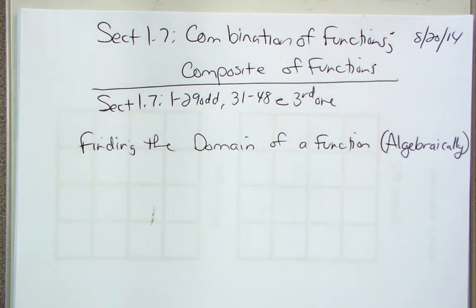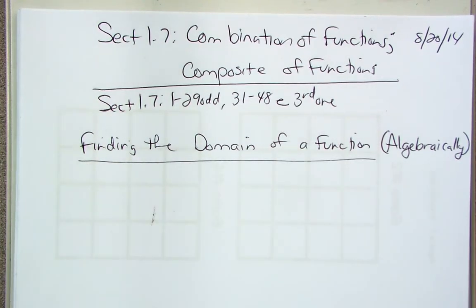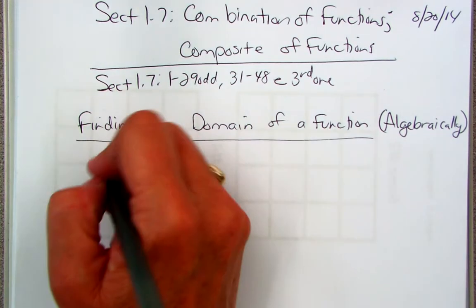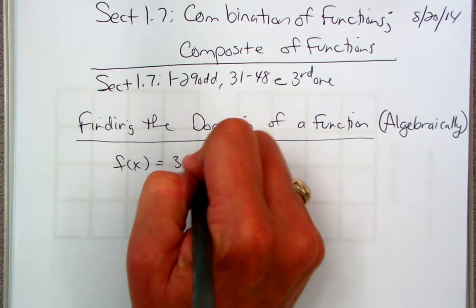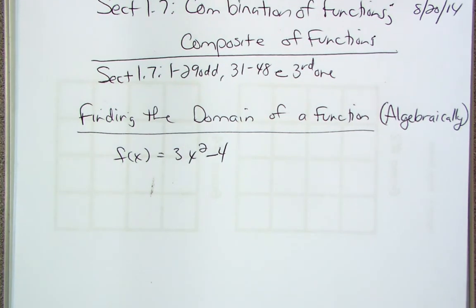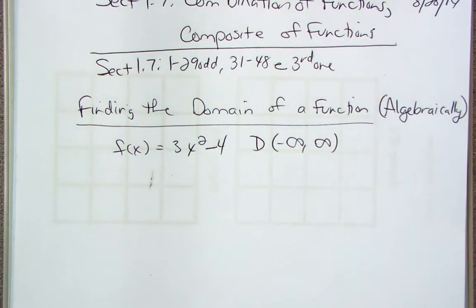Finding the domain algebraically is harder than graphically. Graphically, you can see which x-values are used. Now I have to do it algebraically. Let's write down a function: 3x² minus 4. What kind of function is that? A quadratic — it's a parabola. Is there any value I cannot put in for x? Can I put in 3? A 0? A 5? A negative 100? There's nothing I can't put in, so the domain is all real numbers. Pretty boring.